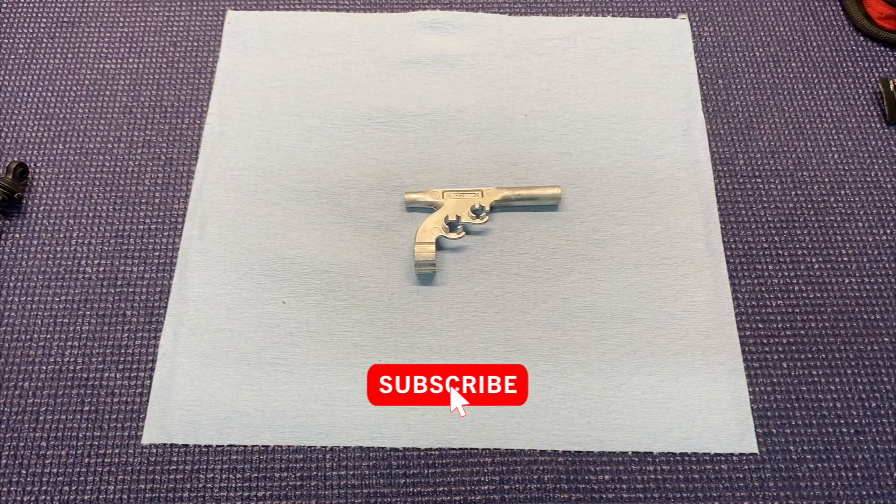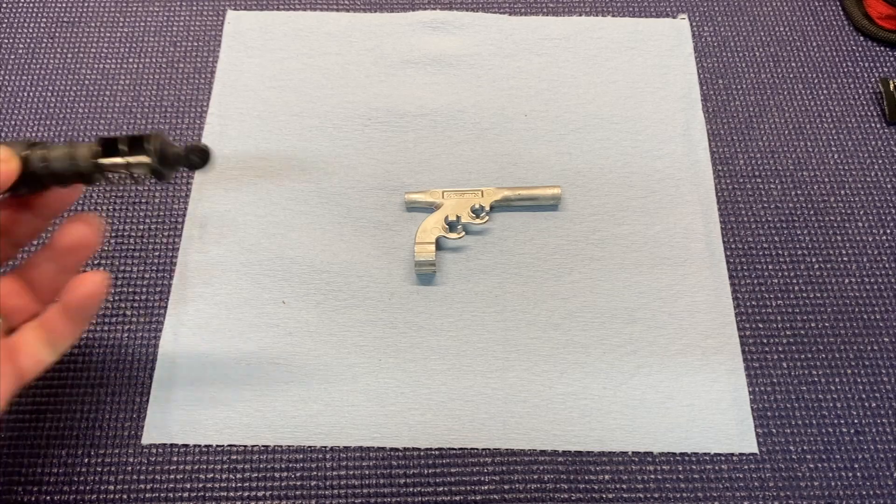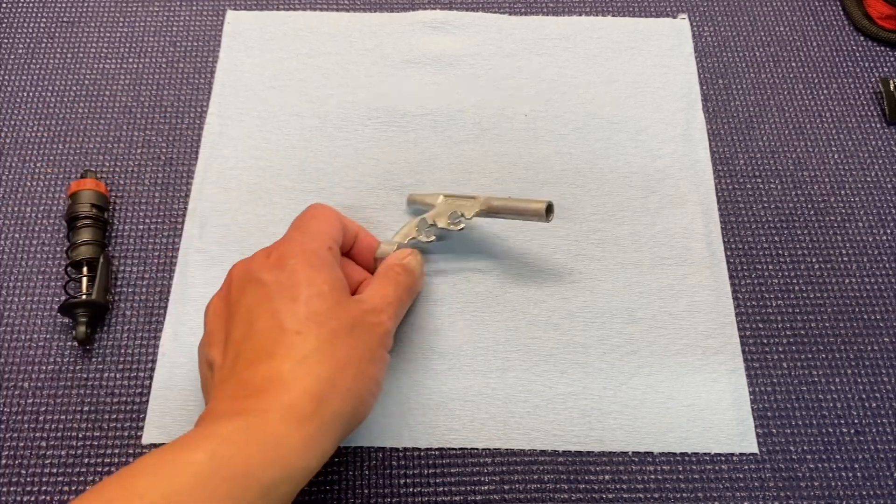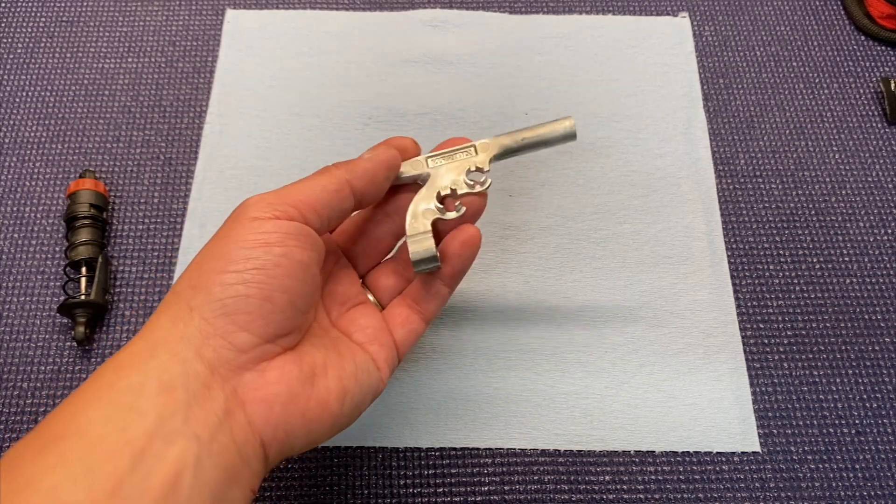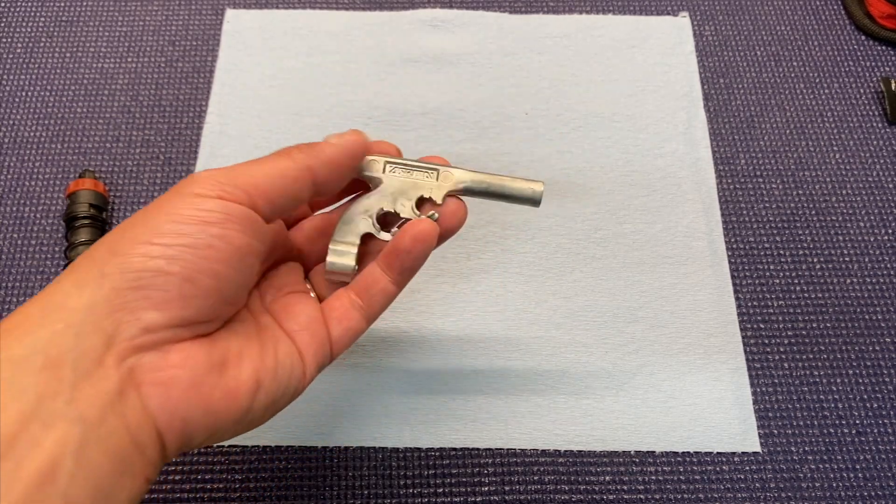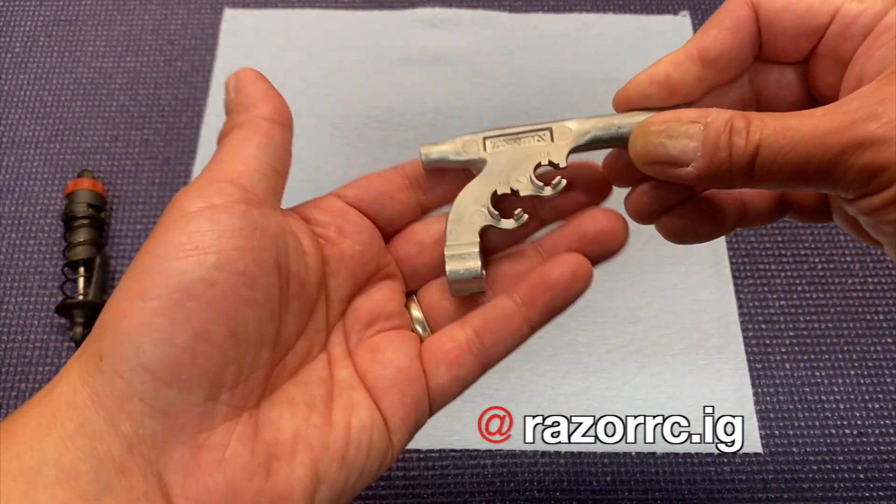So I've got an Arrma Vortex 404 3SBLX, been running that thing and it's time to service the shocks. Looking at this thing, I don't know what it looks like, but I actually used it to open a bottle of beer on my Instagram account.